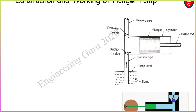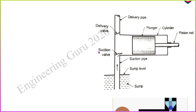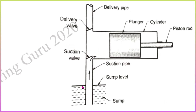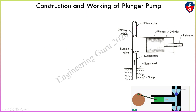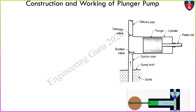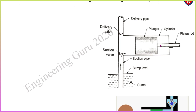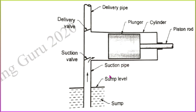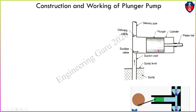The main parts are: this is your delivery valve, this is suction valve, this is the sump, this is called sump level, suction pipe, delivery pipe, this is the plunger, this is called the cylinder, and this is the piston. These are the main parts of the plunger pump. Whenever you draw the schematic diagram of a plunger pump, you have to mention these main parts.